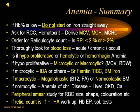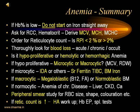Ask for red cell count, hematocrit, and derive the indices MCV and MCH to say whether the patient has hypochromic microcytic, macrocytic, or normocytic anemia. MCHC can also be calculated to identify hereditary spherocytosis. Order for reticulocyte count to obtain the RPI. If RPI is less than 2%, it suggests hypoproliferative anemia. If more than 2%, we are dealing with a case of hemolytic anemia.